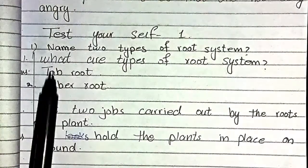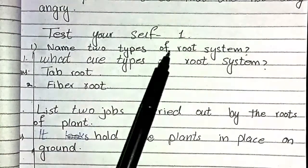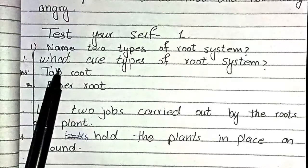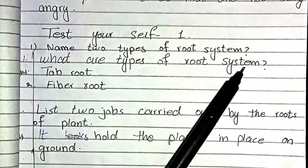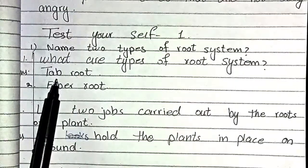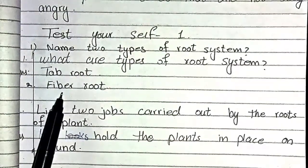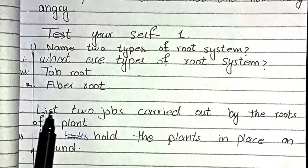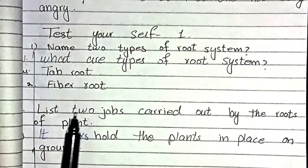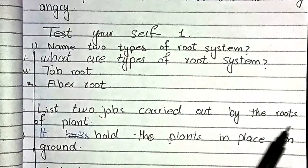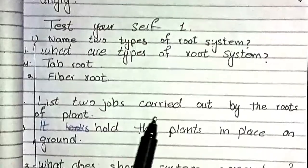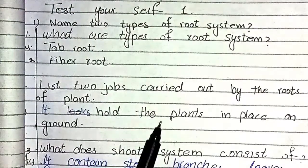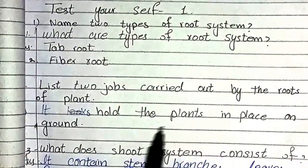First question: Name two types of root system. The types of root system — you have to write down: tap root. Next question: List two jobs carried out by the roots of a plant. Answer: It holds the plants in place on the ground.